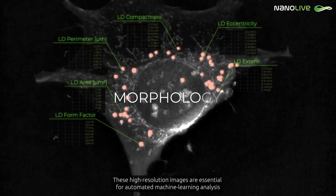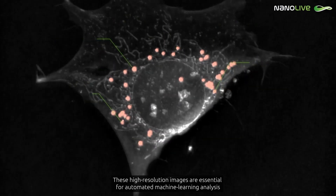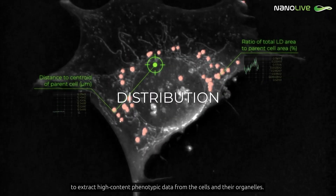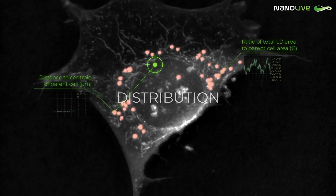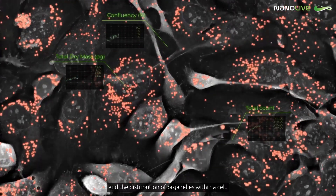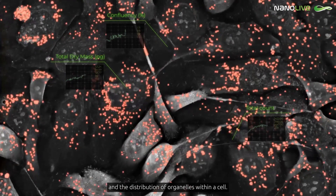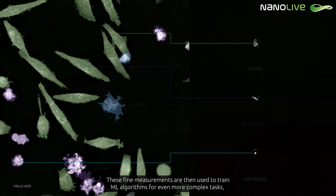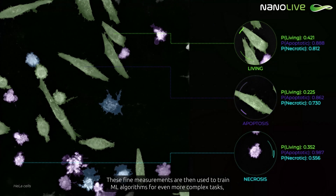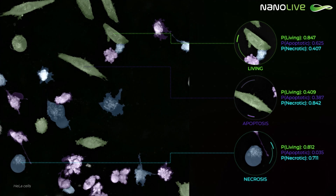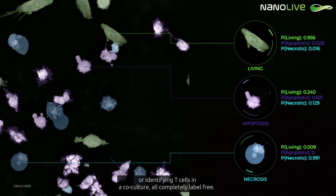These high-resolution images are essential for automated machine learning analysis to extract high-content phenotypic data from the cells and their organelles. These include detailed measurements of morphological features and the distribution of organelles within a cell. These fine measurements are then used to train machine learning algorithms for even more complex tasks, like classifying cells as living, apoptotic or necrotic, or identifying T-cells in a co-culture, all completely label-free.